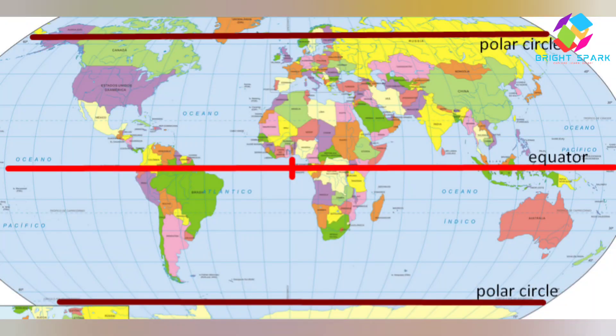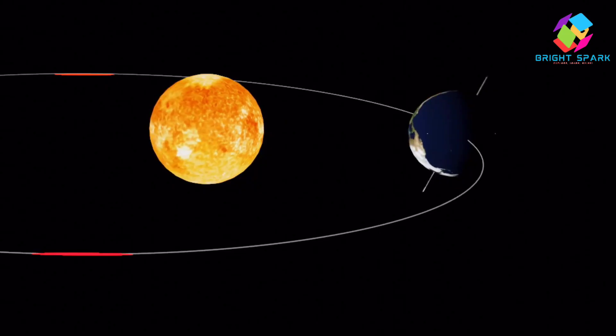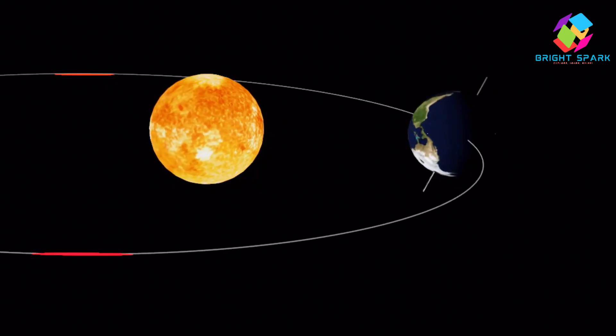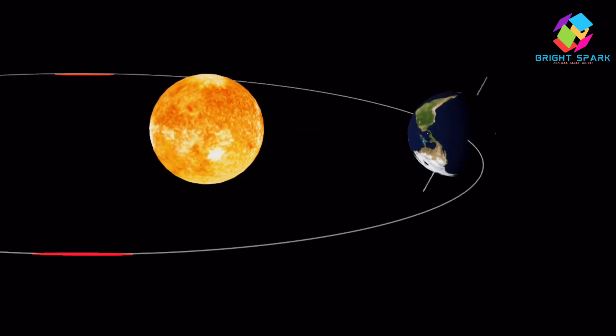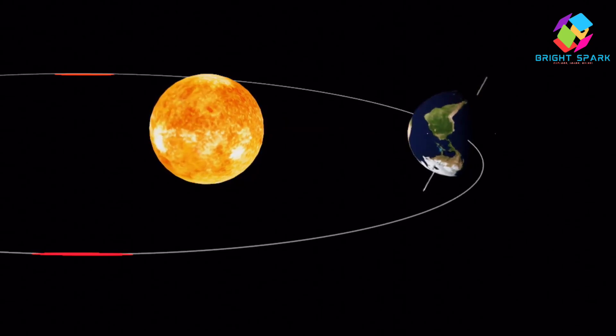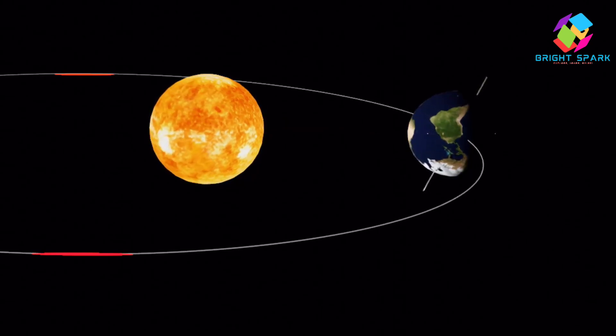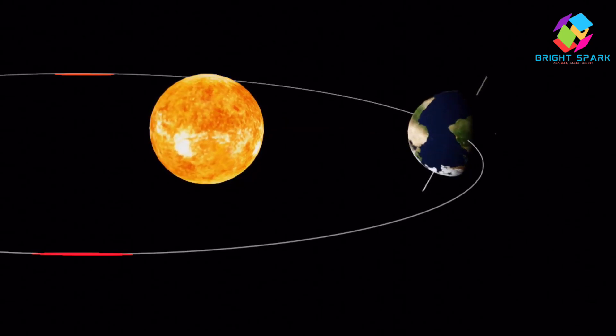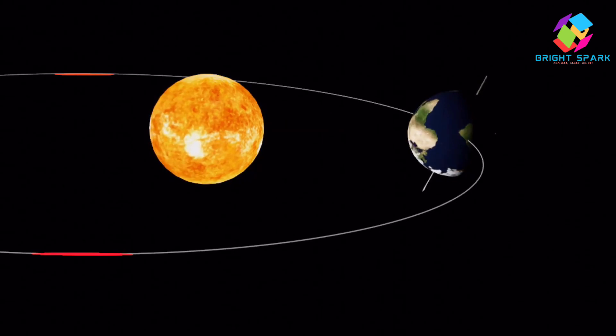What about places with no seasons? Some places near the equator, like Ecuador or Singapore, don't really have seasons. That's because they always get the same amount of sunlight all year round, so it's mostly warm there all the time.